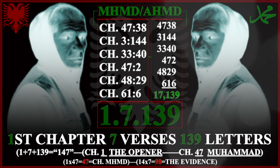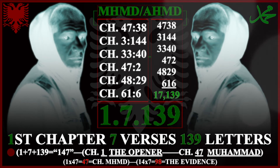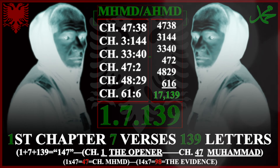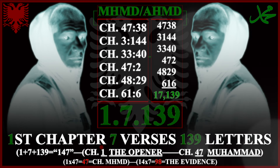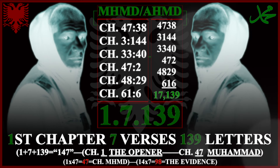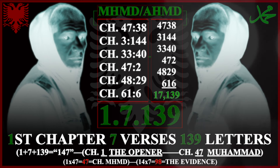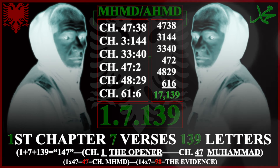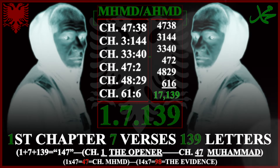If we add 1 plus 7 plus 139, it gives us 147 — that is, chapter 1 connected to chapter 47, Muhammad. 1 times 47 equals 47, chapter Muhammad. 14 times 7 equals 98, chapter the Evidence. The evidence is in the name Muhammad.